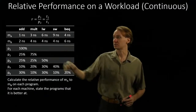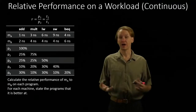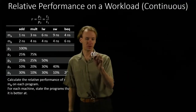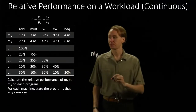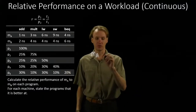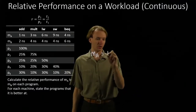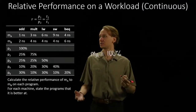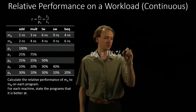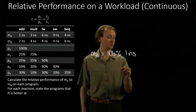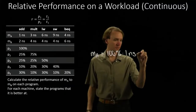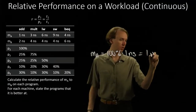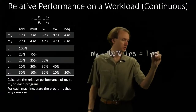Program one is the easiest. All of its instructions are add instructions. Starting with machine A, 100% of the instructions are add instructions, and each of those take one nanosecond to run. So the average execution time here is one nanosecond.